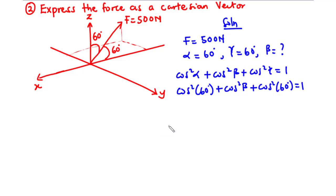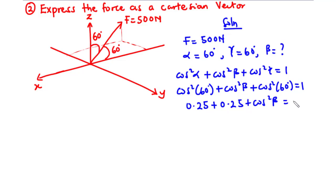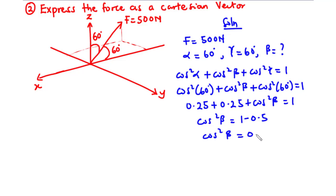Now let's simplify this to find the value of beta. cos²60 is equal to 0.25. So we have 0.25 + cos²β + 0.25 = 1. When we add these two values, we have 0.5. Therefore, cos²β = 1 − 0.5, so cos²β = 0.5.